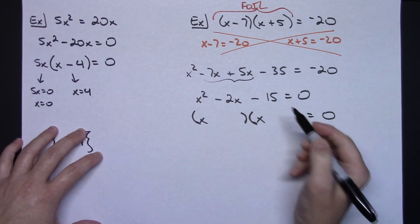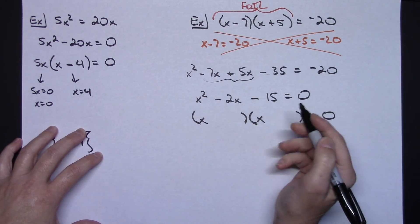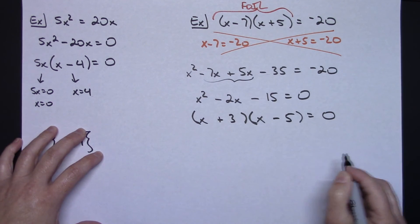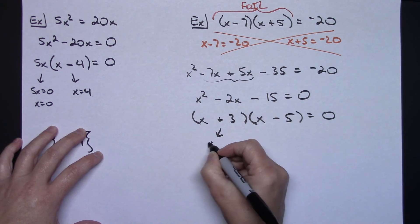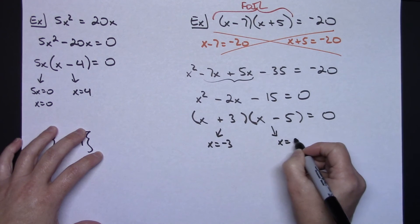So I need an x and an x. Two numbers that multiply to negative 15 and add to a negative 2. So, I think that's going to be a plus 3 and a minus 5. And then setting both of those equal to 0. This is going to give you the x equals negative 3. This is going to give you the x equals 5.